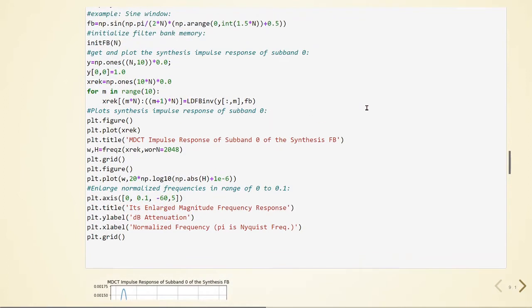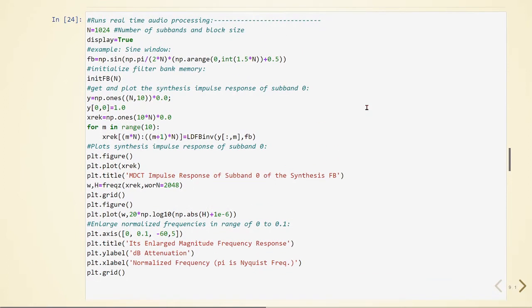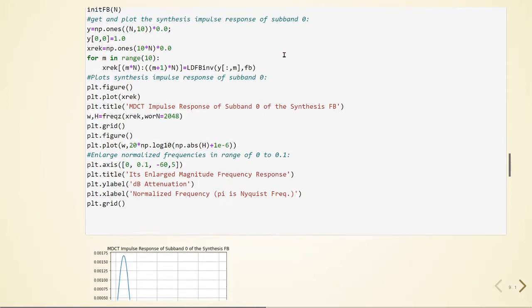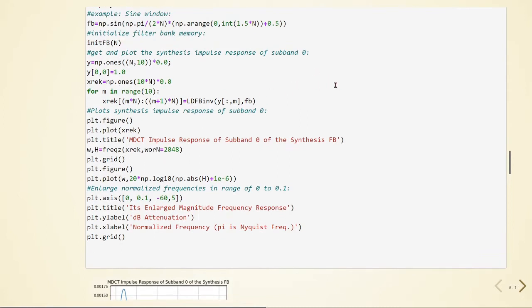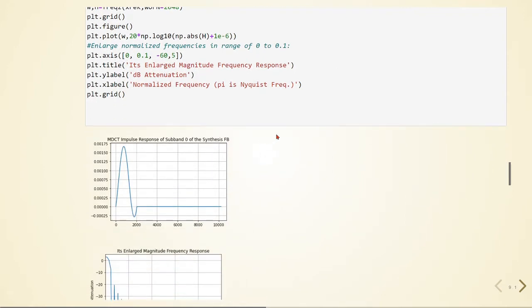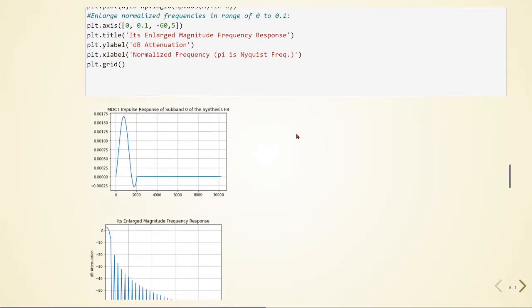Here we are just doing an example to test our implementation. We are going to plot this. We will get and plot the synthesis impulse response for sub-band zero. Here we are defining an impulse, here we are filling the reconstruction to zeros. In this for loop we are calculating the output of the filter bank or synthesis, it is the reconstructed signal. And here we have the MDCT impulse response of sub-band zero of the synthesis filter bank.